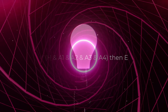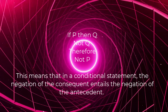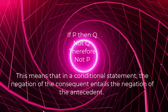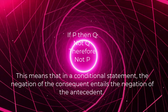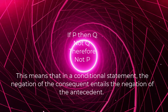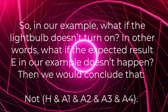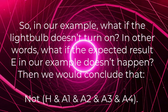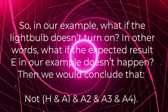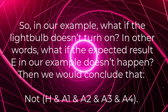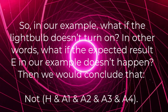Before we go on, a brief recap of logic. If P, then Q; not Q; therefore not P. This means that in a conditional statement, the negation of the consequent entails the negation of the antecedent. So in our example, what if the lightbulb doesn't turn on — what if the expected result E doesn't happen? Then we would conclude not (H and A1 and A2 and A3 and A4).